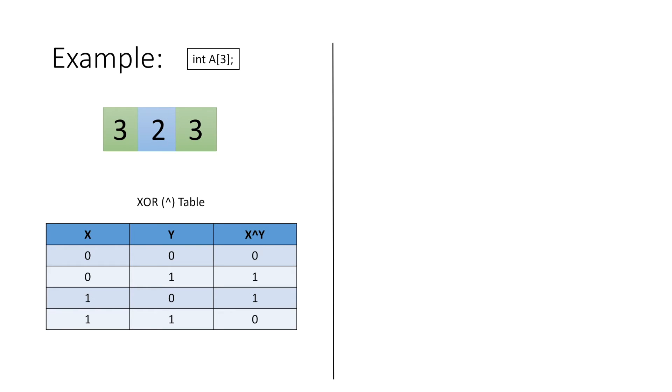Now to understand the working of our program, let's write all the numbers in their corresponding binary forms. 2 is represented as 10 and 3 is represented as 11 in binary.